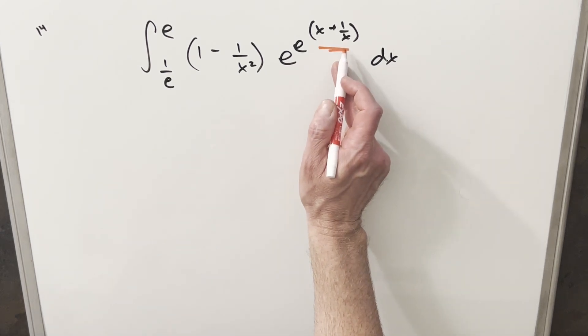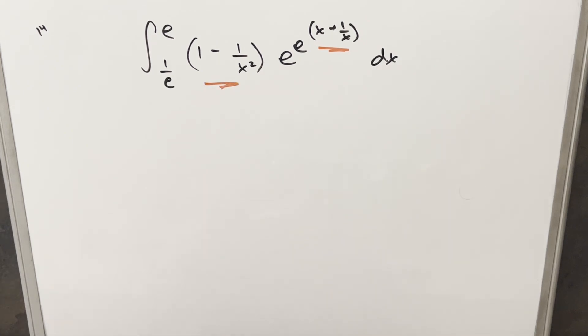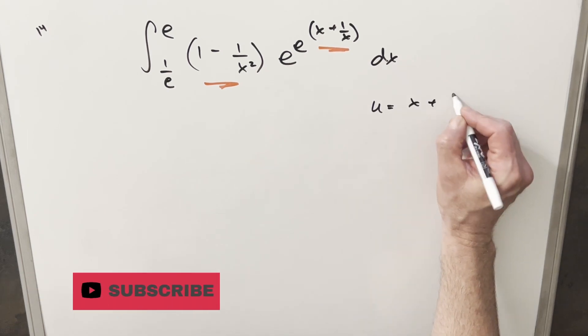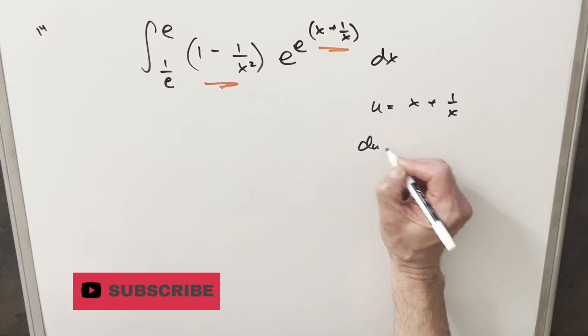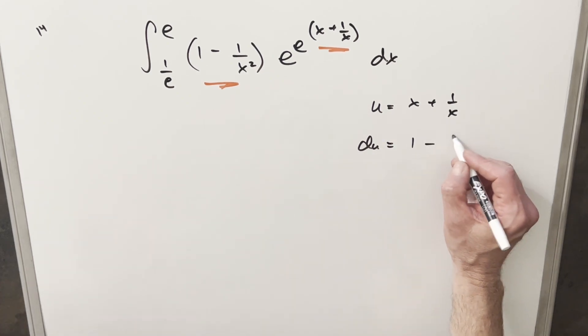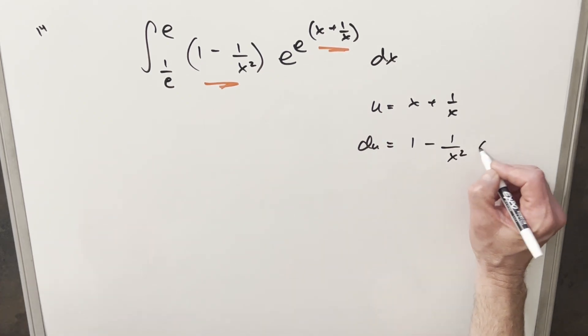Substituting here, the derivative of this is going to be this right here. Let's just see what happens when I do it that way. So we'll set this up. For my u, we just have x plus 1 over x. And then du, derivative of this, is going to be exactly this: 1 minus 1 over x squared dx.